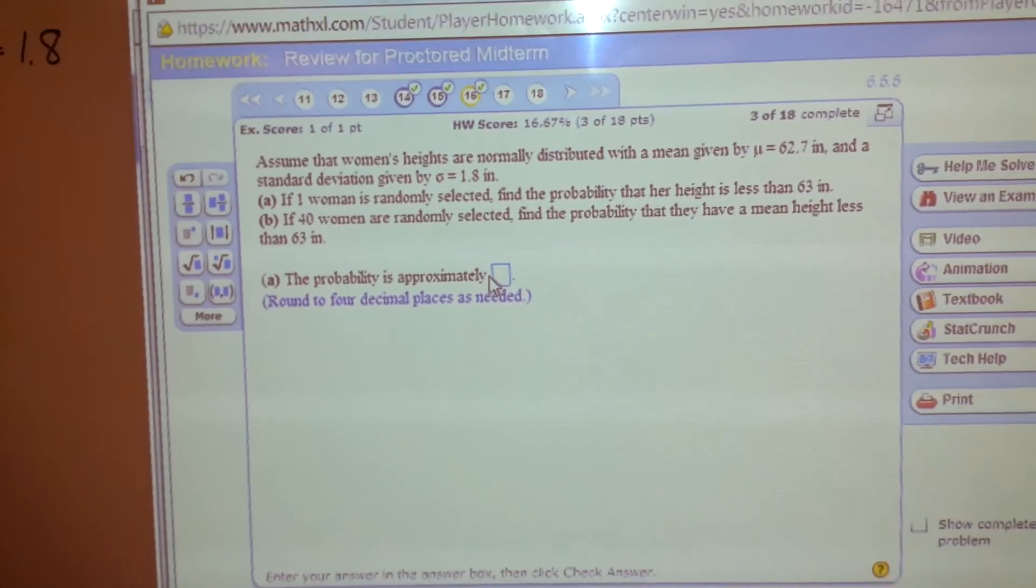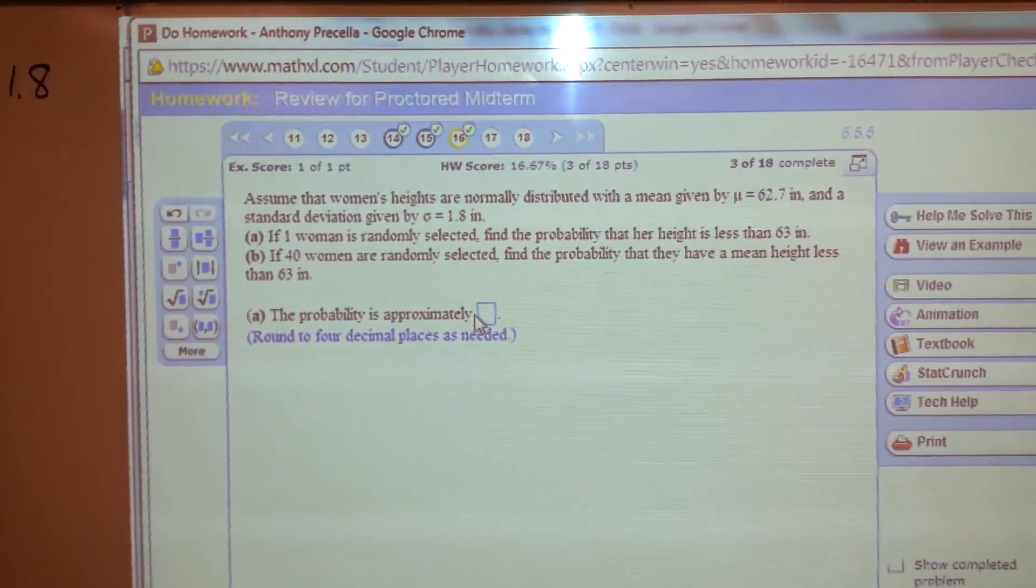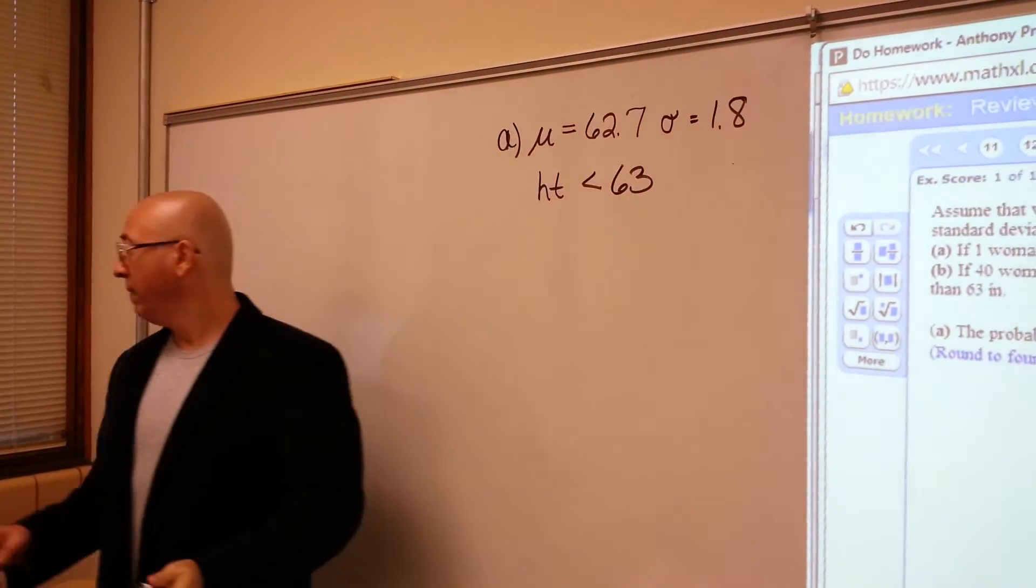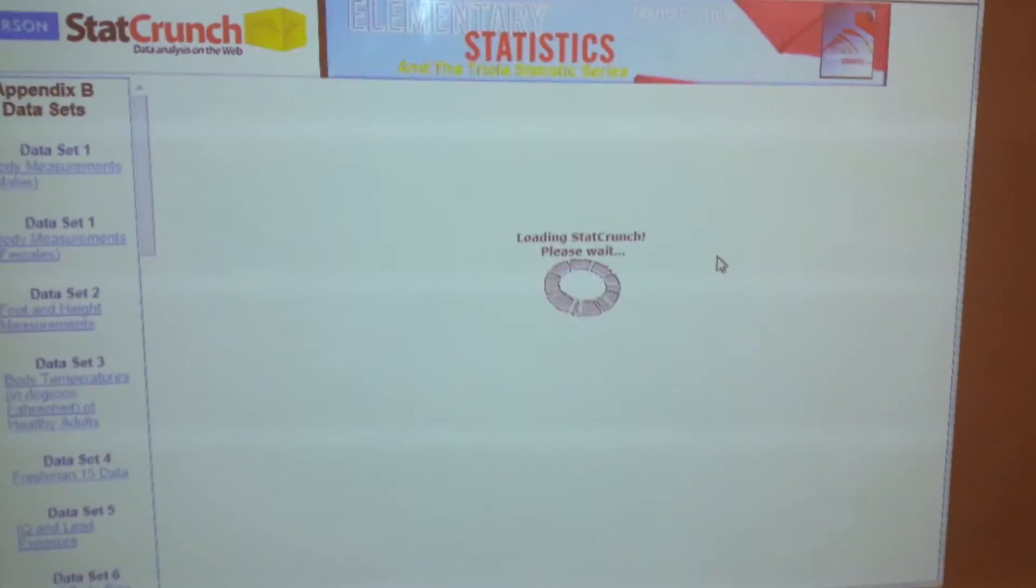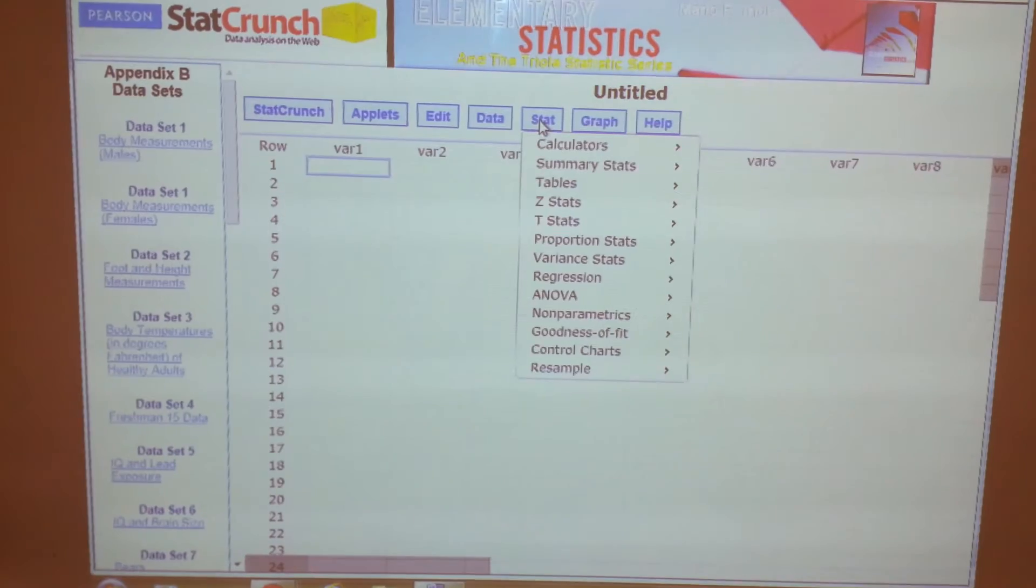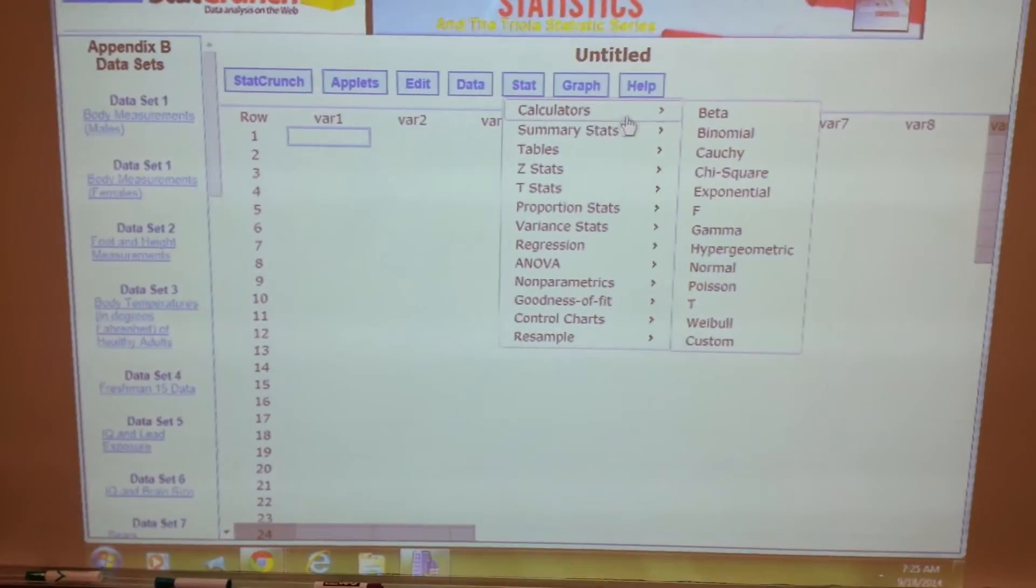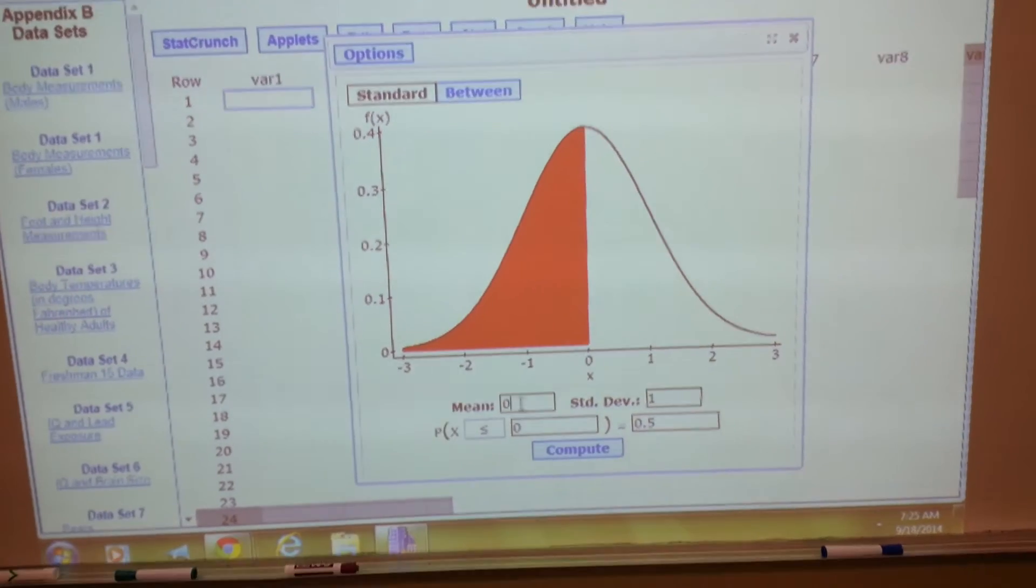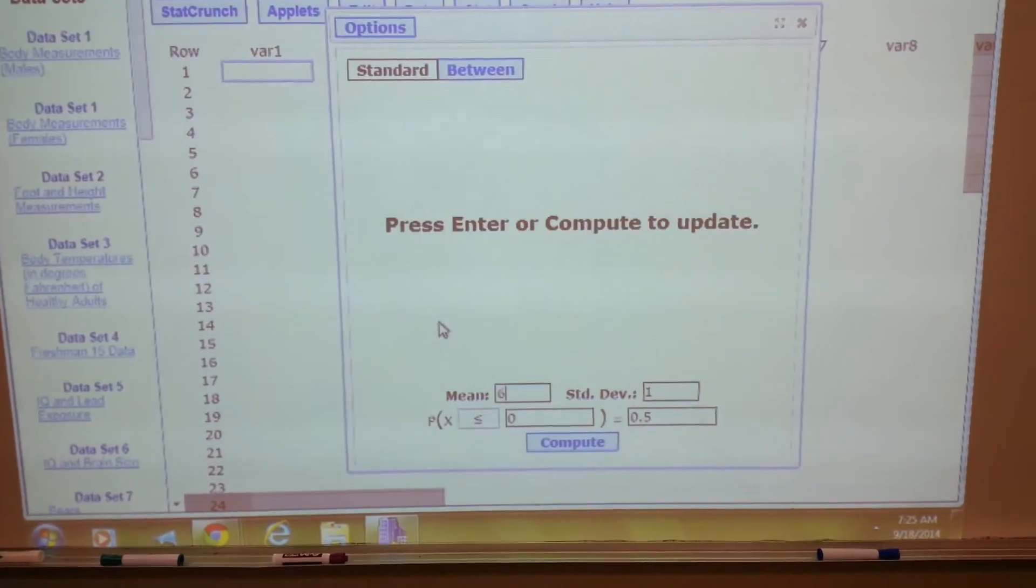Find the probability that this one randomly selected woman has a height less than 63 inches. To do this using StatCrunch, I'll pull up StatCrunch. I'll click Stat, Calculators, Normal, and then start filling in the information that we're given.